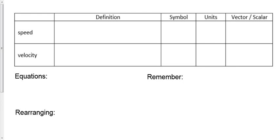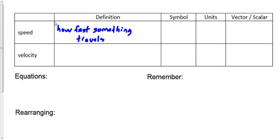We're going to define speed pretty loosely as how fast something travels, just how fast something goes. The symbol for speed is just a lowercase V. A capital V in chemistry would be volume; a lowercase V is speed.